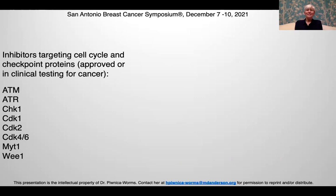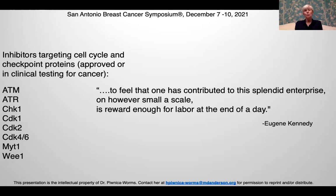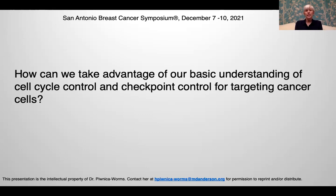Most of you know that inhibitors targeting cell cycle and checkpoint proteins are now approved or in clinical testing for cancer, which is really gratifying to me personally and to other members of the cell cycle and checkpoint field. To borrow a quote from Eugene Kennedy: 'to feel that one has contributed to this splendid enterprise on however small a scale is reward enough for labor at the end of the day.' So how did my lab go about taking advantage of our basic understanding of cell cycle and checkpoint control for targeting cancer cells?